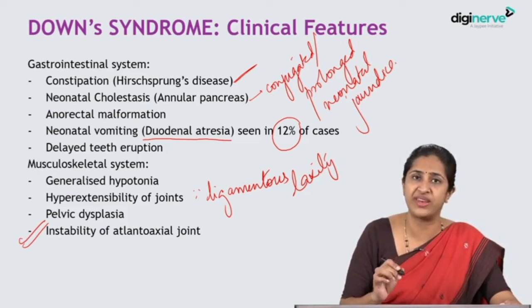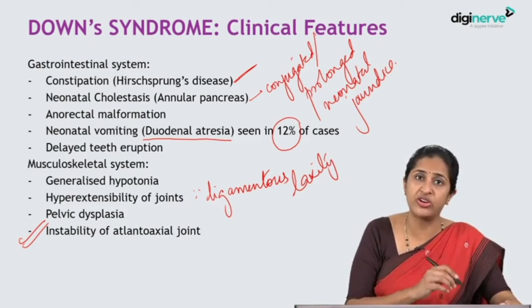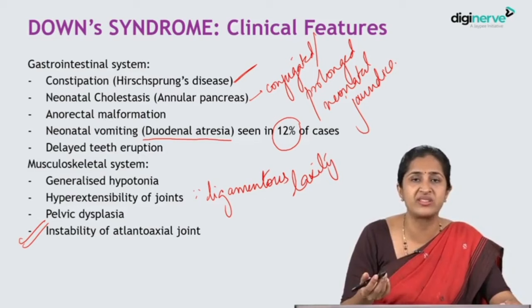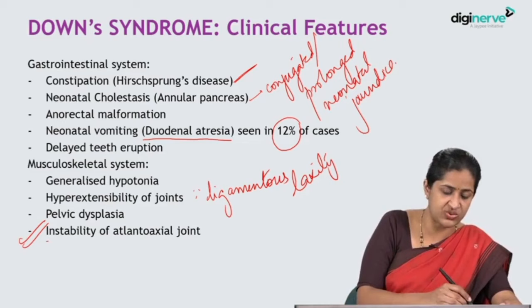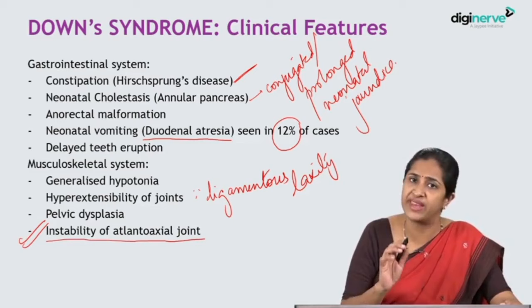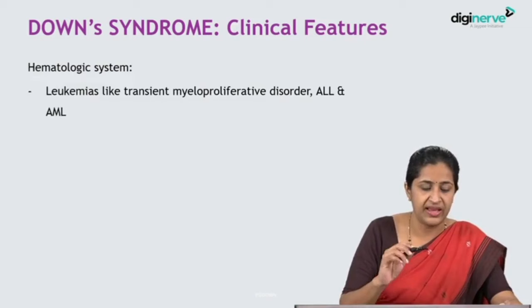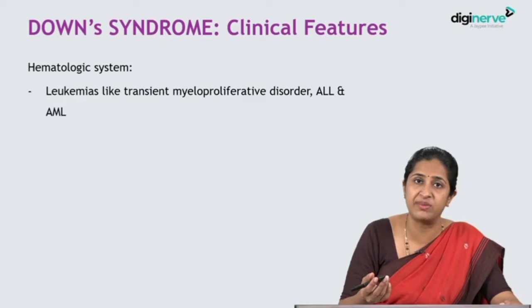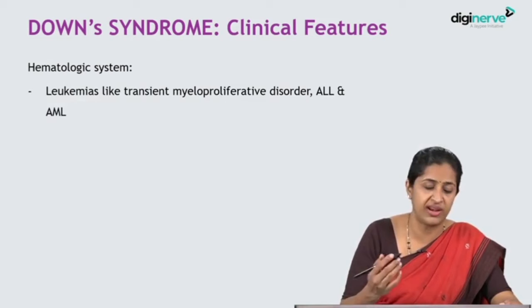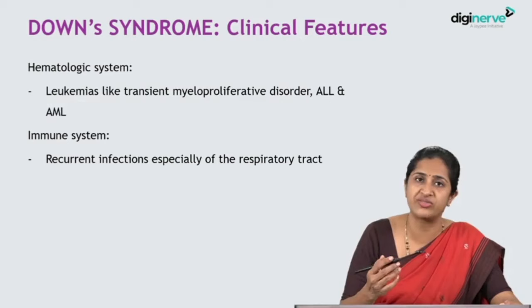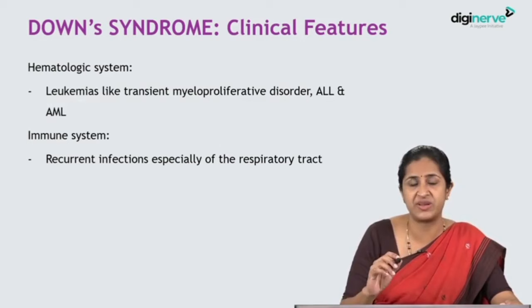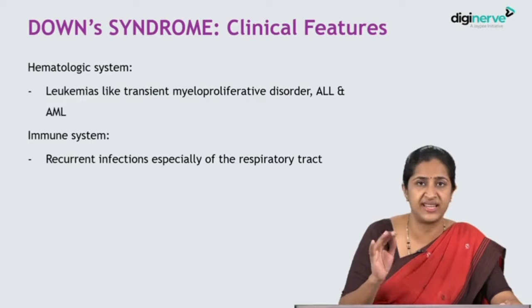In the musculoskeletal system, you can have generalized hypotonia with hyperextensibility of joints due to ligamentous laxity. There will be pelvic dysplasia with flared iliac wings visible on pelvic x-rays. There can also be instability of the atlanto-axial joint — this is very important because sudden hyperextension when the joint is already unstable can cause subluxation, resulting in cervical cord compression and quadriparesis. Parents should be counselled about this. In the hematological system, Down syndrome children have a predisposition to develop leukemias: transient myeloproliferative disorder, acute lymphoblastic leukemia, and acute myeloid leukemia.